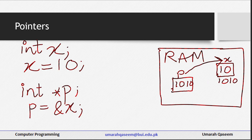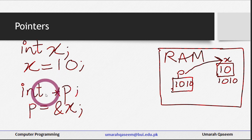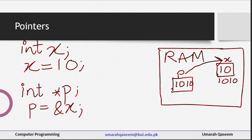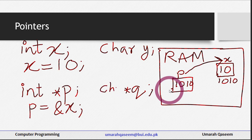One more very important thing: if I want the pointer p to store the address of variable x, the data type of both these variables must be the same. So if I want a pointer to store the address of an integer variable, the pointer should be int. For example, if there is another variable char y, and I want a pointer q to store the address of y, then the data type of this pointer must be char. And then I can write q = &y.